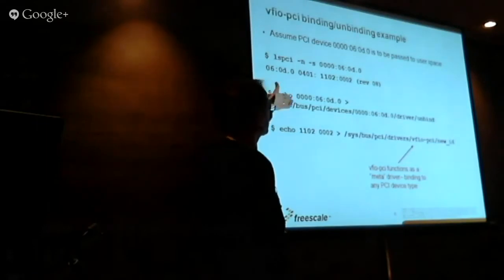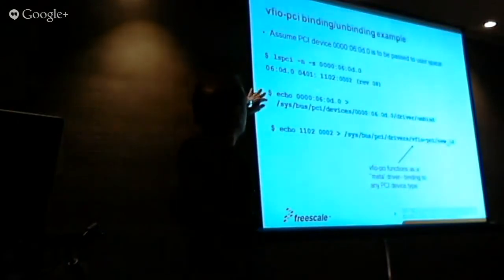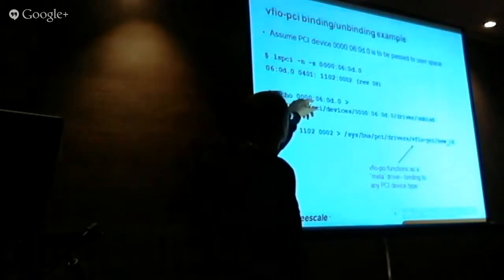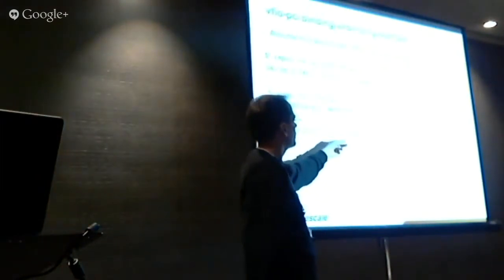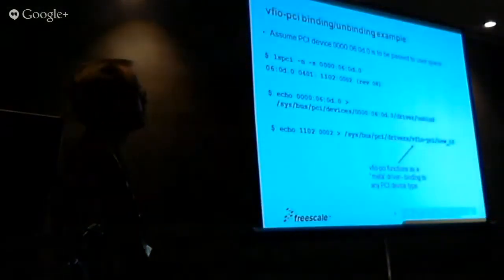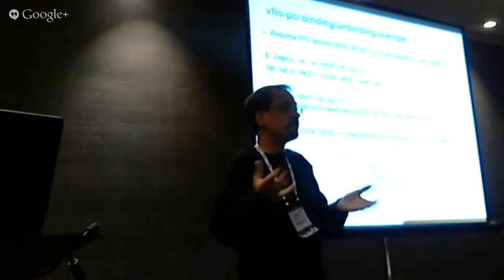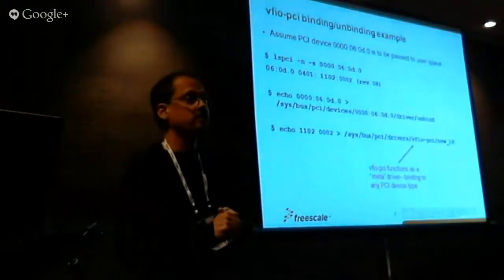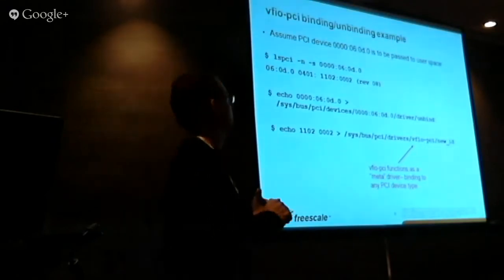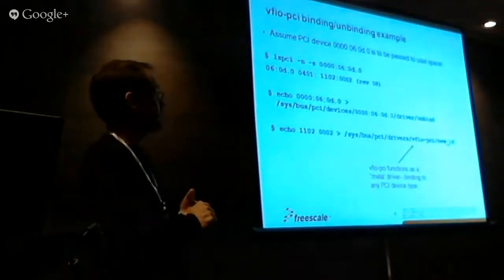Next you echo the device type into SysFS. There's a special call called NewID under the VFIO PCI driver. The VFIO PCI is just a standard PCI driver, but by default it's not set up to handle any devices at all because we don't know what devices we're going to be passing through. It could be an E1000 card or something else. The new ID mechanism lets you tell the driver you're now handling this type of device ID.